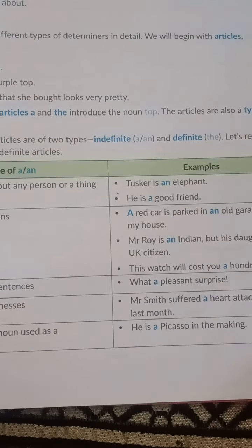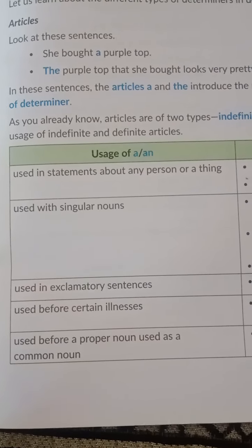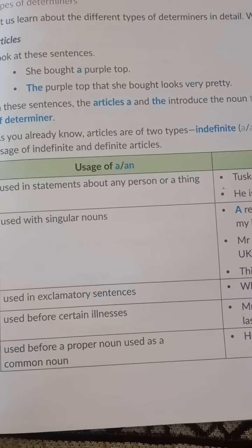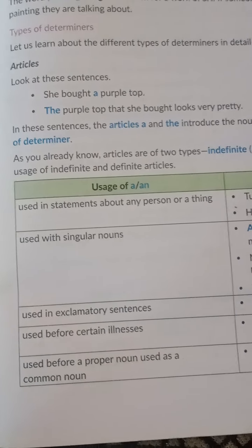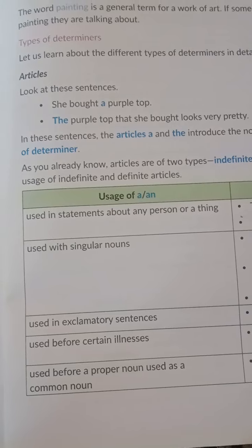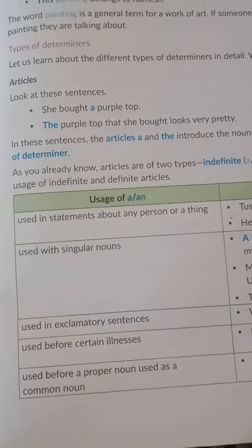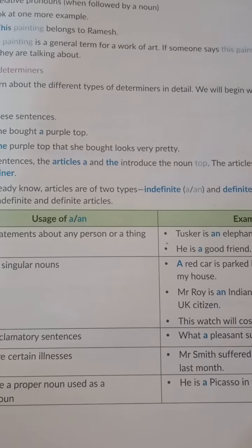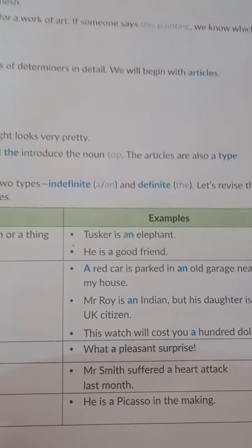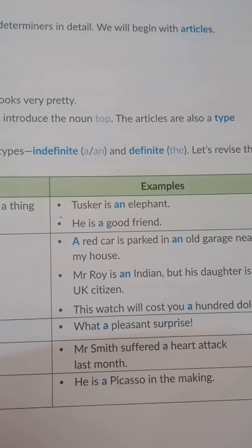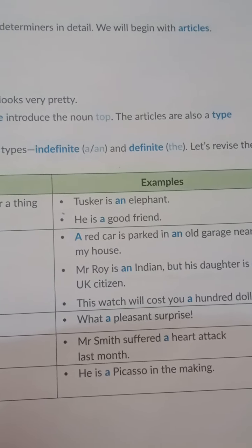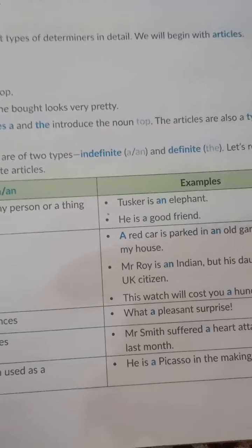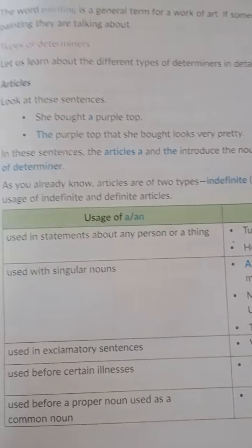Indefinite articles are those where it is used with any person — there is no definite person or definite item to be indicated; you can indicate any one. For example, 'Tusket is an elephant.' Over here it is indicating an elephant, and 'a' indicates one but does not specify it.